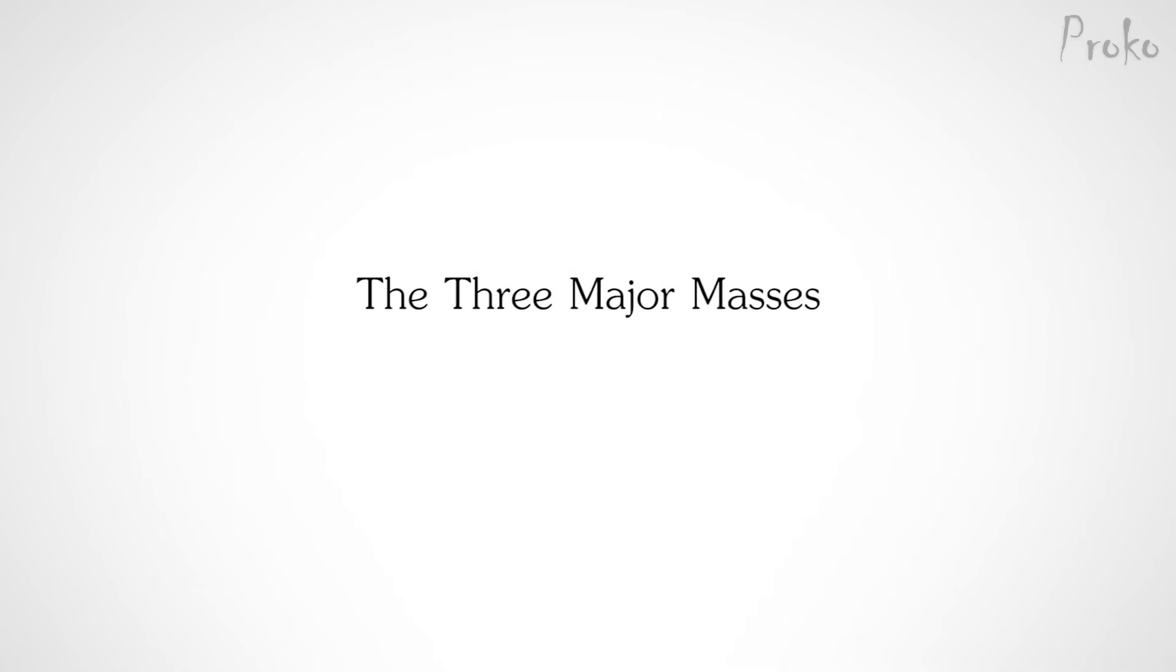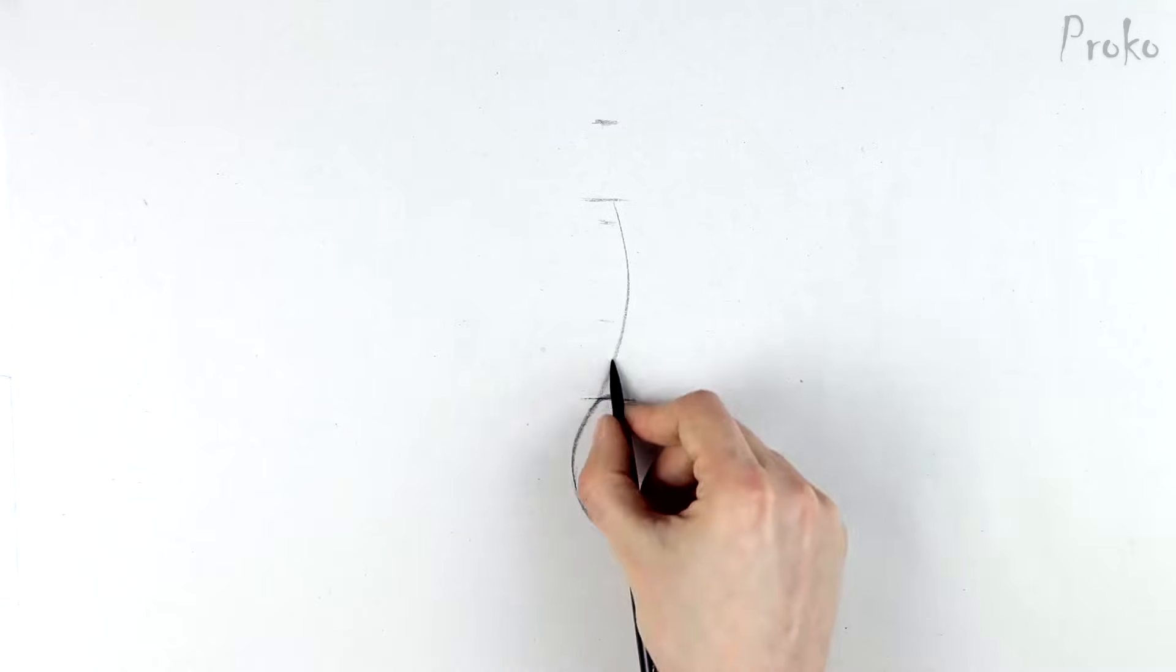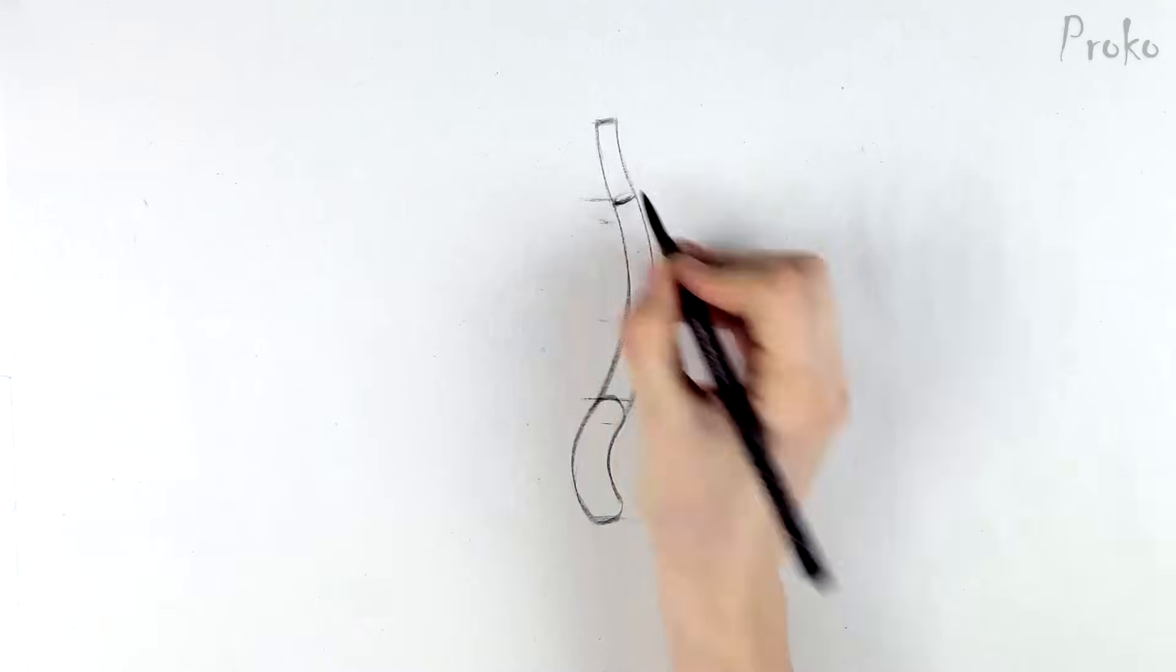The three major masses. One of the most important things about the spine is that it moves the three major masses. The head, ribcage, and pelvis. So it makes sense to include the three masses while you practice drawing the spine.